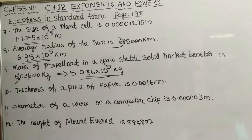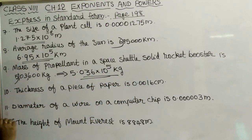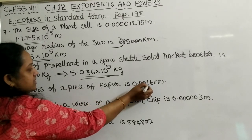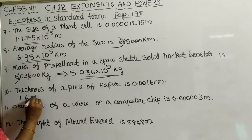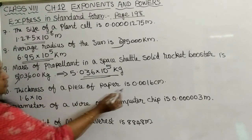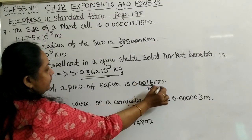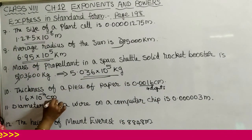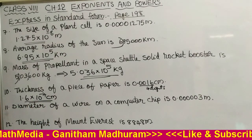Next: the thickness of a piece of paper is 0.0016 centimeters. It is a decimal number, so the power of 10 is negative. The first non-zero digit is 1, so we put the decimal point after it: 1.6 into 10 raised to the power. After the decimal point we have a total of 4 digits. So we write minus 4. The standard form is 1.6 into 10 raised to minus 4 centimeters.